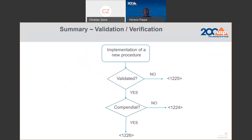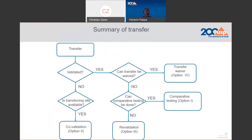Briefly, how we define when to use validation versus verification: when the method we are trying to implement is not validated, we will validate using 1225. If it is validated and it's a compendial method, we will use verification under 1226. If it is validated but not a compendial method, the appropriate activity will be transfer.